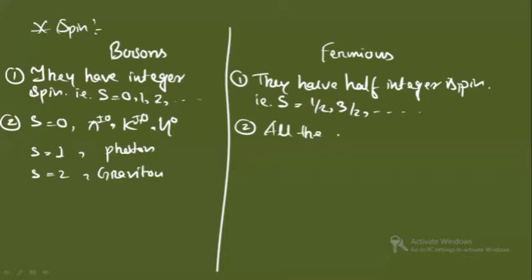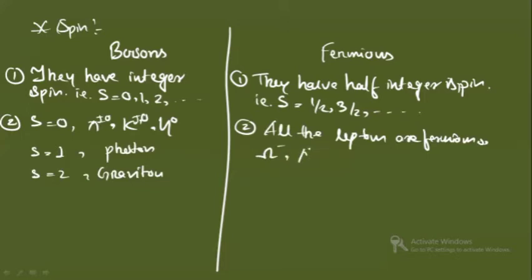Examples of fermions: all the leptons are fermions — we will see what leptons are in the later part. Also omega, lambda, proton, neutron, neutrino, and electrons are fermions. They are all having spin-1/2.